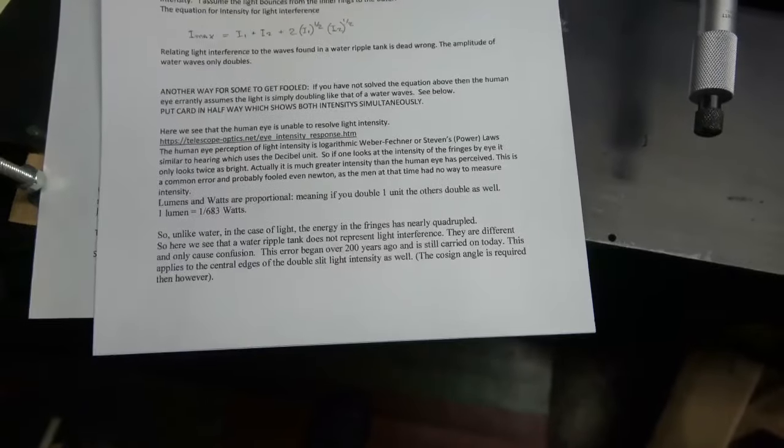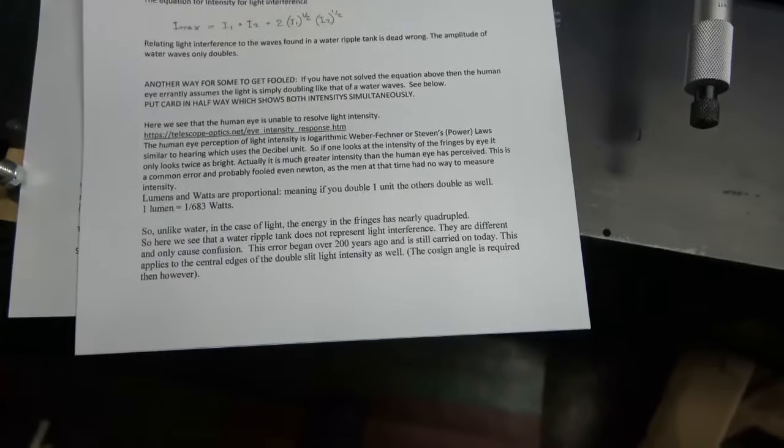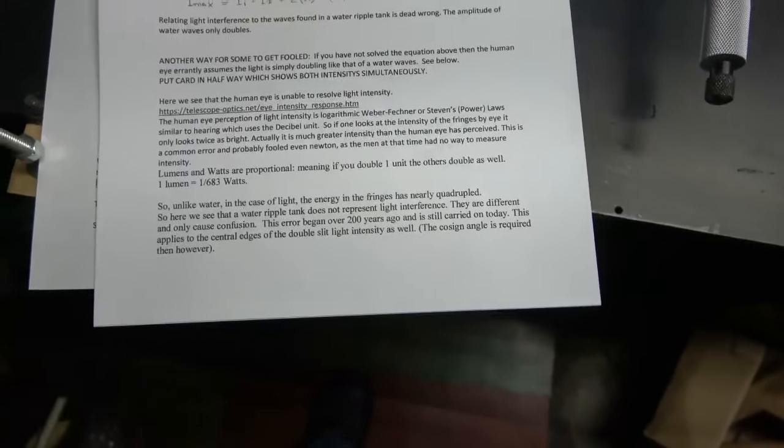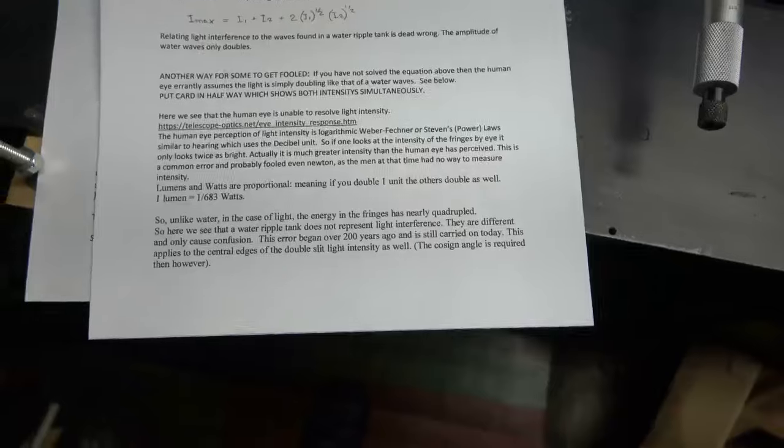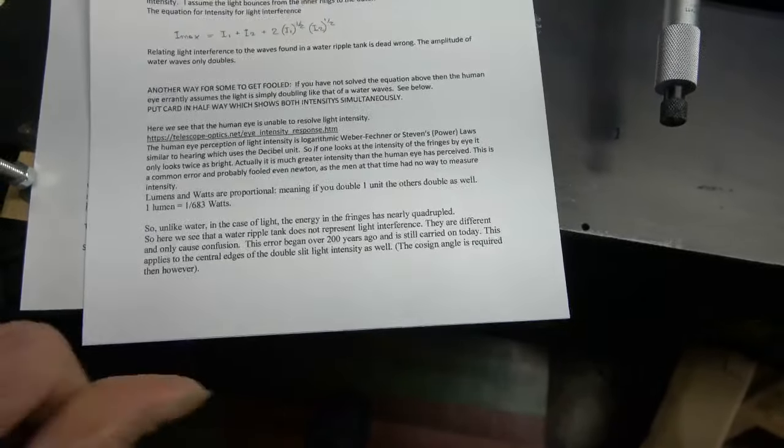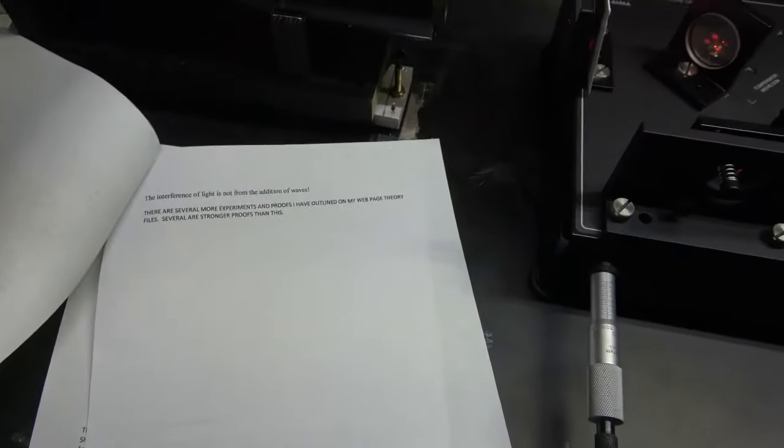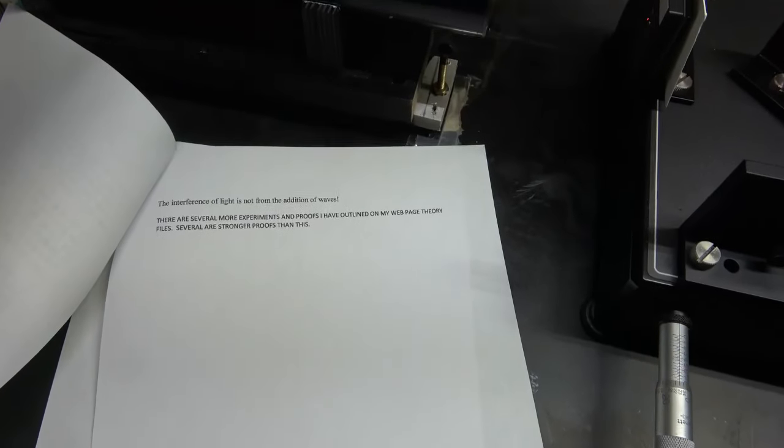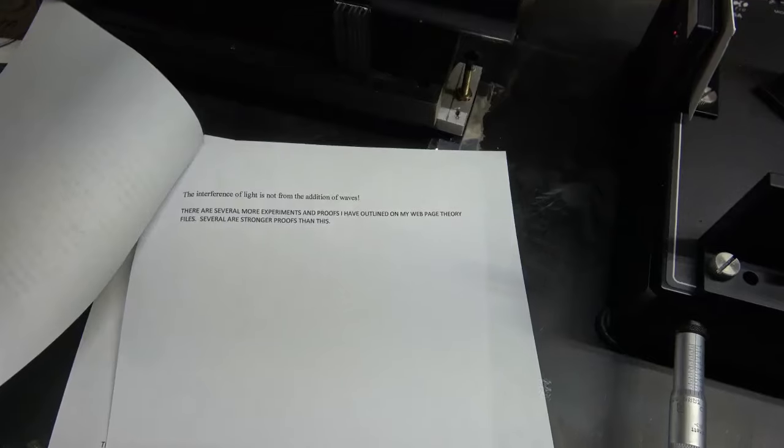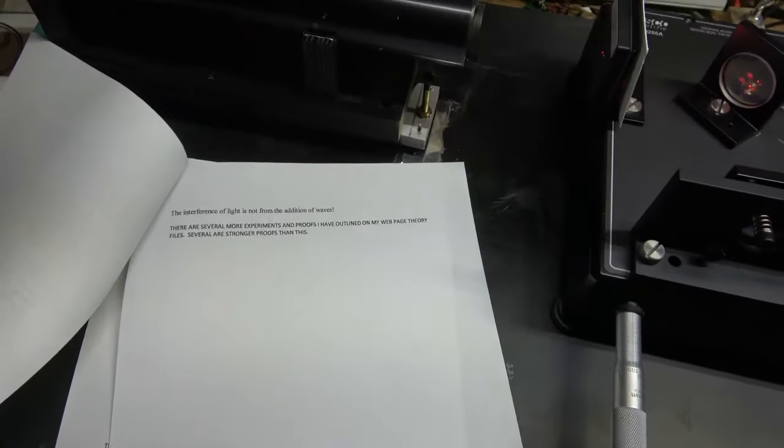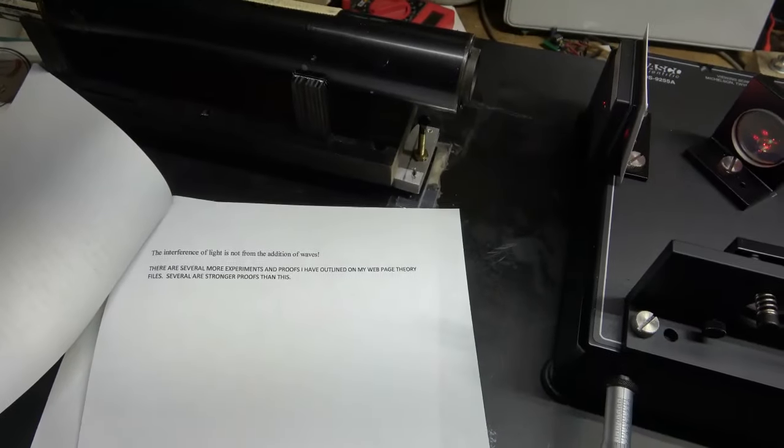The error began over 200 years ago and is still carried on today. This applies to the central edges of the double slit light intensity as well, except the cosine angle is required then. So the conclusion is the interference of light is not from the addition of waves. There are several more experiments and proofs I've outlined on my web page theory. Thank you.